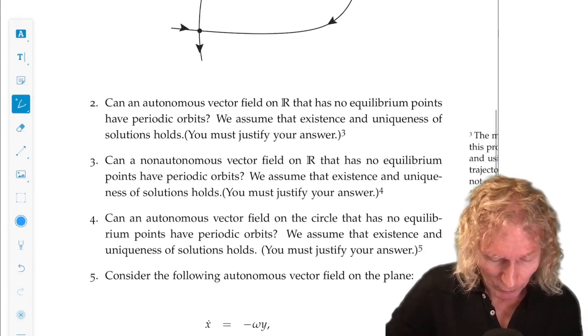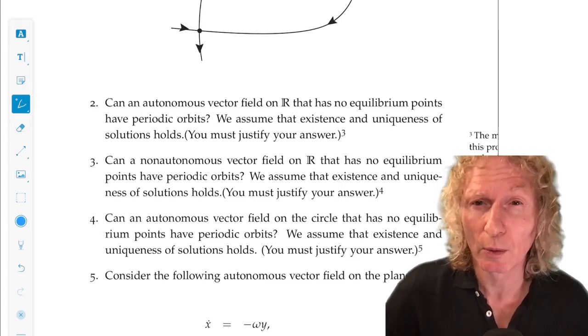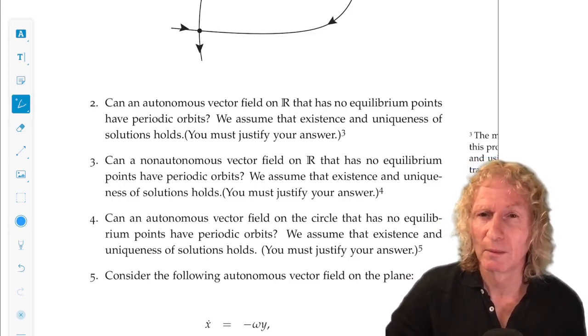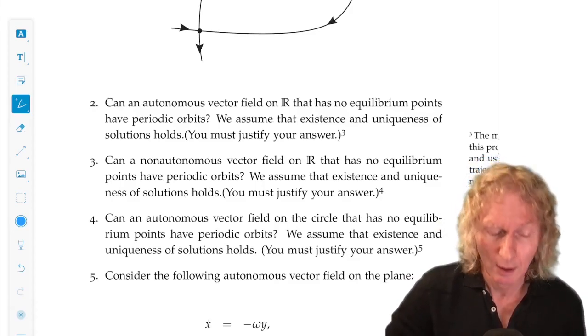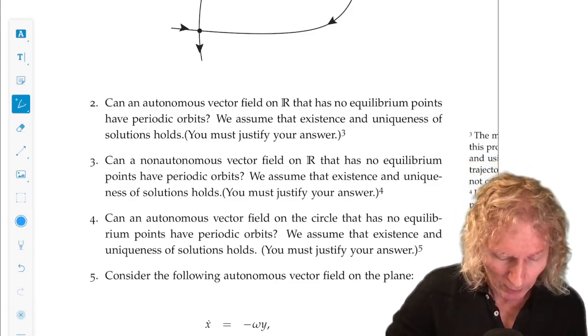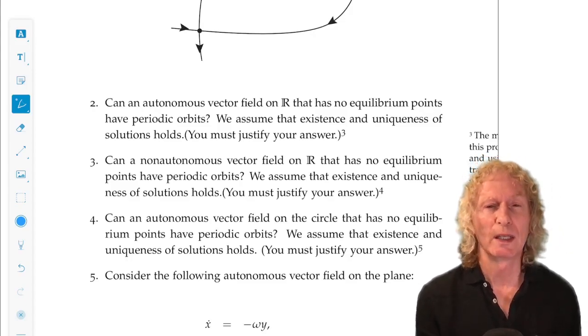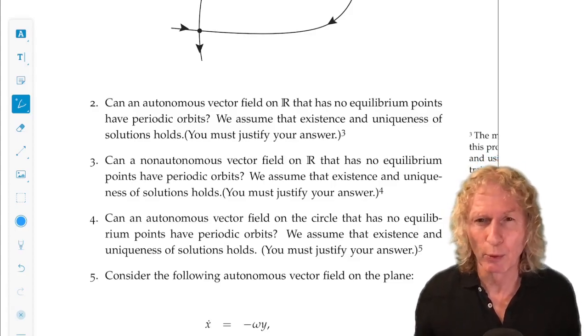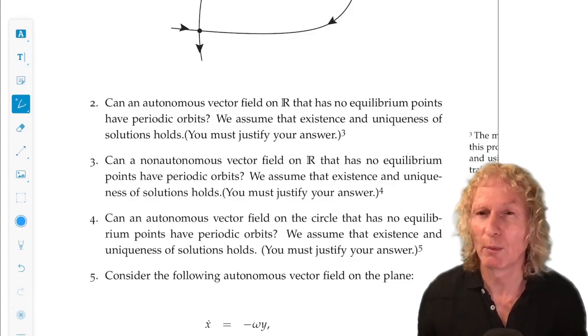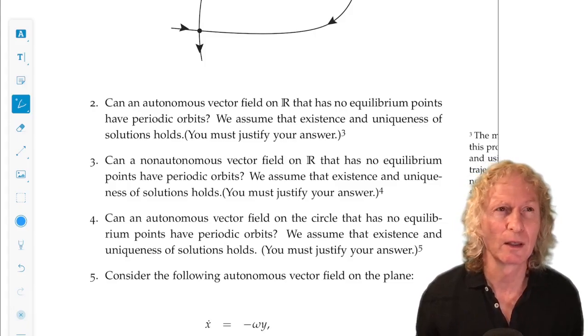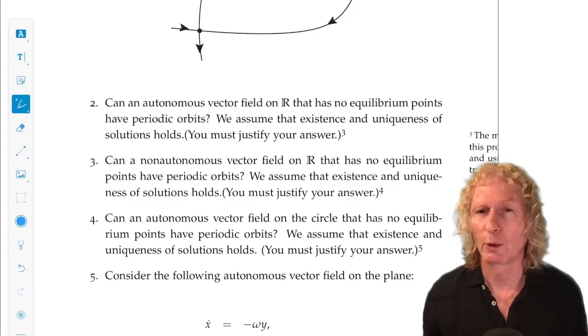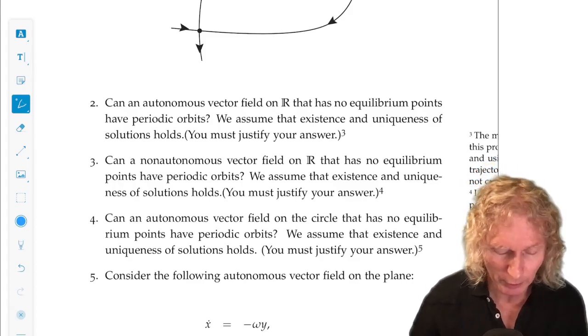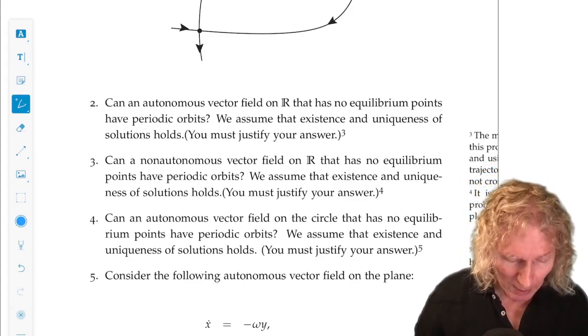Can a non-autonomous vector field on the real line that has no equilibrium points have periodic orbits? Yes. Big difference now between autonomous and non-autonomous on the real line. Just make an example. When anyone asks you, can this happen? You can think about some elaborate proof under all conditions, but just make an example. How about x dot equal cosine t? Try that. Maybe you want to generalize it a bit.